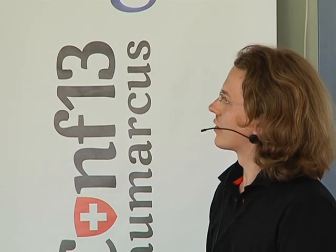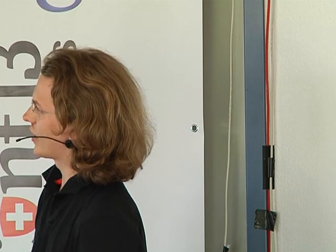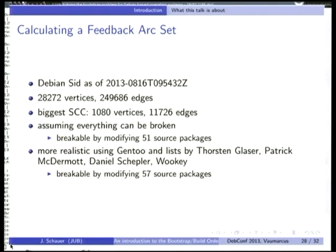Another thing is calculating a feedback arc set — the set of edges which, if removed from the graph, makes it acyclic. We want a small feedback arc set because we want to modify as little as possible. I tested that with Debian sid as of today: the graph has 28,000 vertices and a quarter million edges, and the biggest strongly connected component has 1,000 vertices as we saw before. Assuming everything can be broken, all of Debian can be bootstrapped by modifying just 51 source packages — which is, of course, a very optimistic assumption.